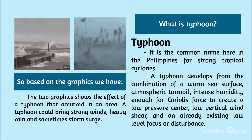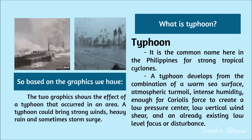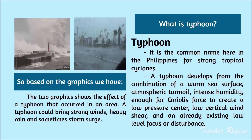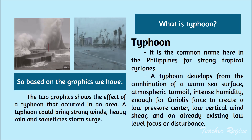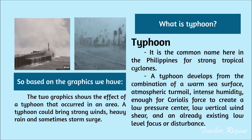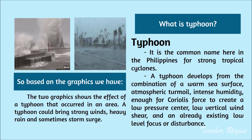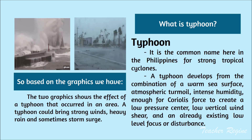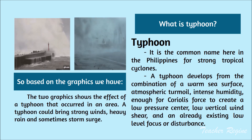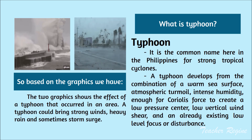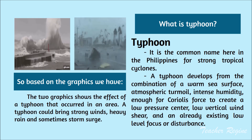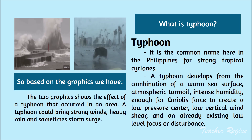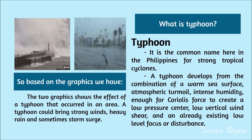The destructive effect of typhoon includes flooding in the cities and the countryside, flash flood in areas with denuded mountains, erosion, landslides, and destruction of properties. Typhoon is the common name here in the Philippines for strong tropical cyclones. A typhoon develops from the combination of a warm sea surface, atmospheric turmoil, intense humidity, enough for Coriolis force to create a low pressure center, low vertical wind shear, and an already existing low level focus or disturbance.